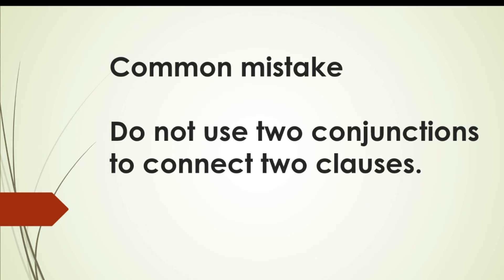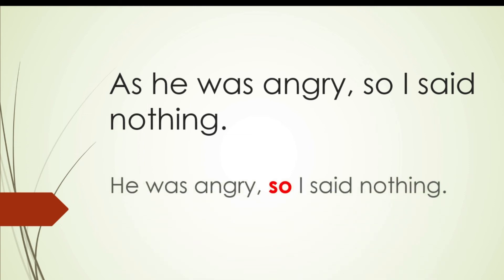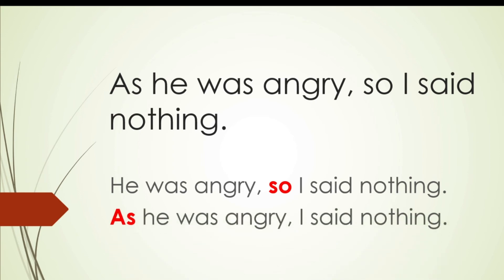Common mistakes. You can use only one conjunction to connect two clauses. Do not use two conjunctions or transitive adverbs of the same meaning in a sentence — this is a mistake that often appears in essays, so avoid it. Consider the sentence: 'As he was angry, so I said nothing.' Can you identify the error? It has used two conjunctions — as and so. You have to remove one of them. You can say: 'He was angry, so I said nothing.' Or: 'As he was angry, I said nothing.' You cannot use them both.